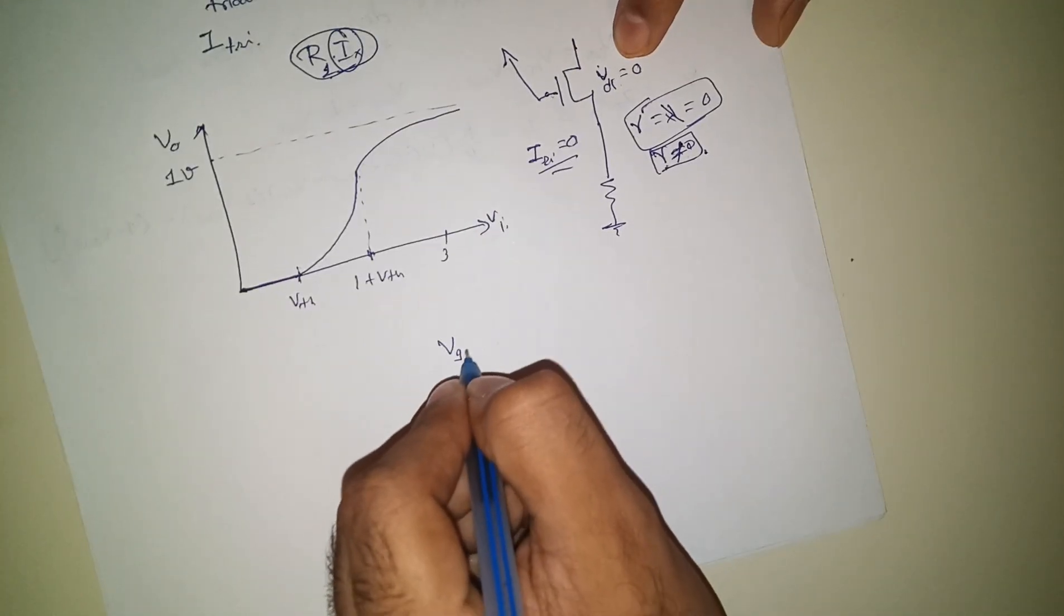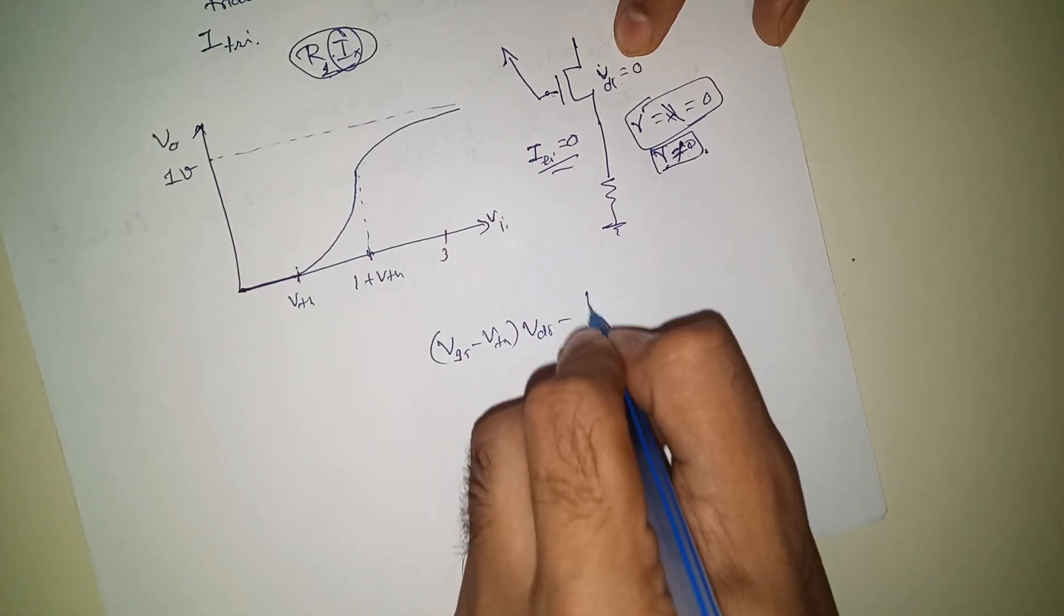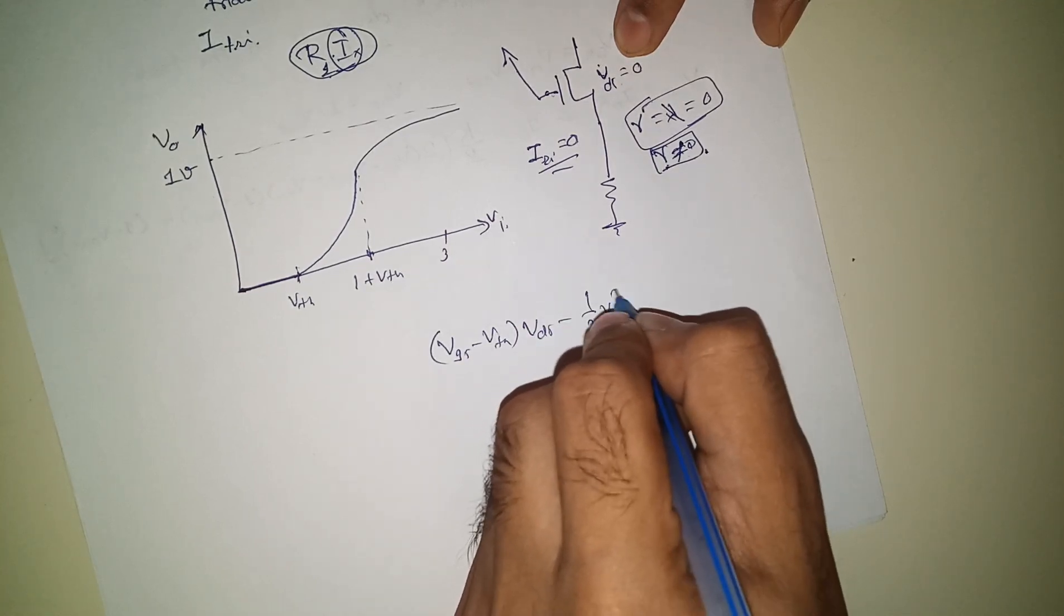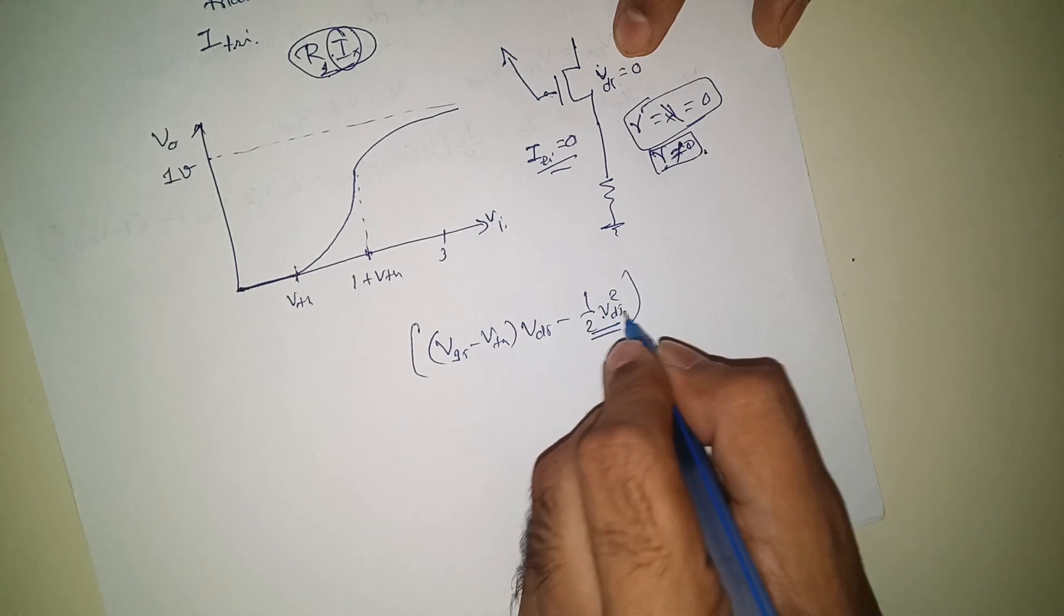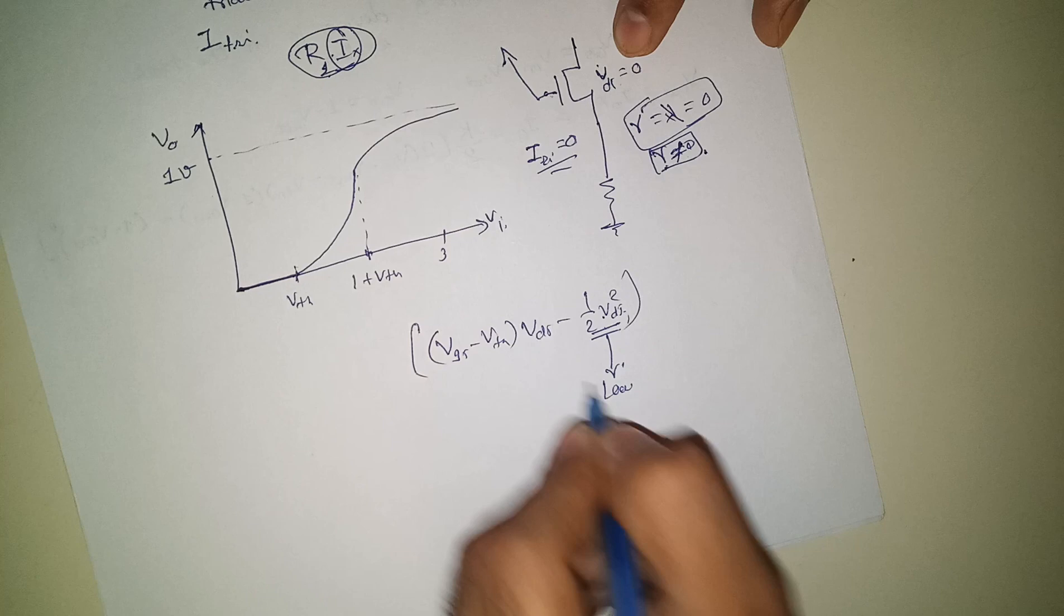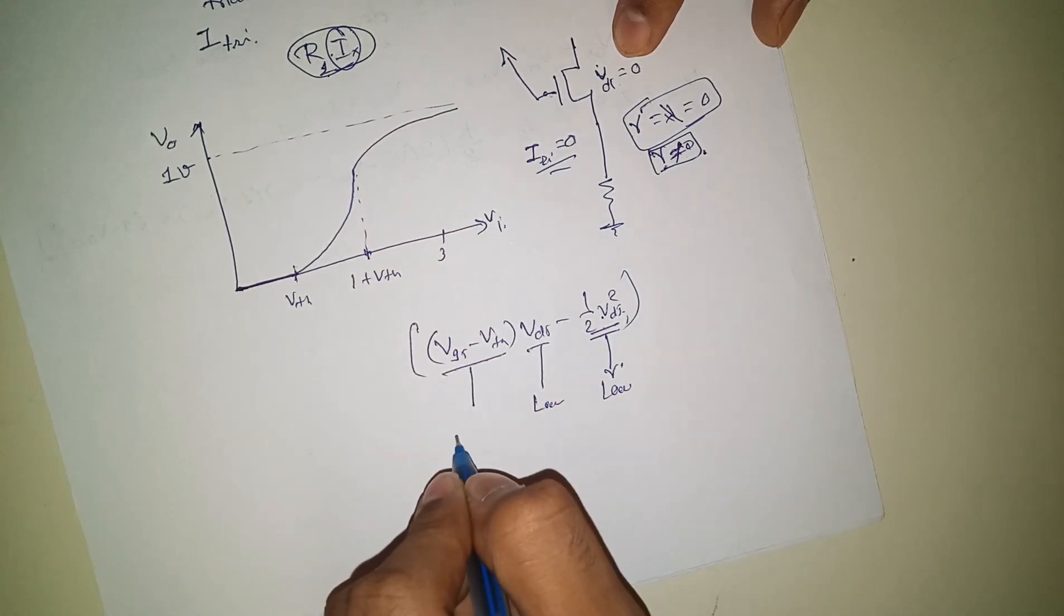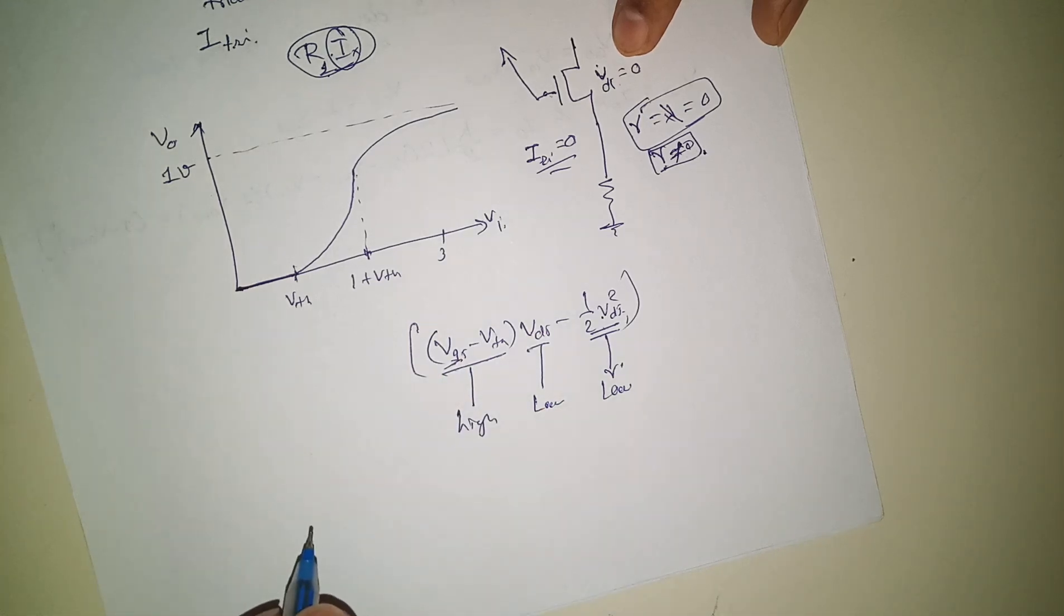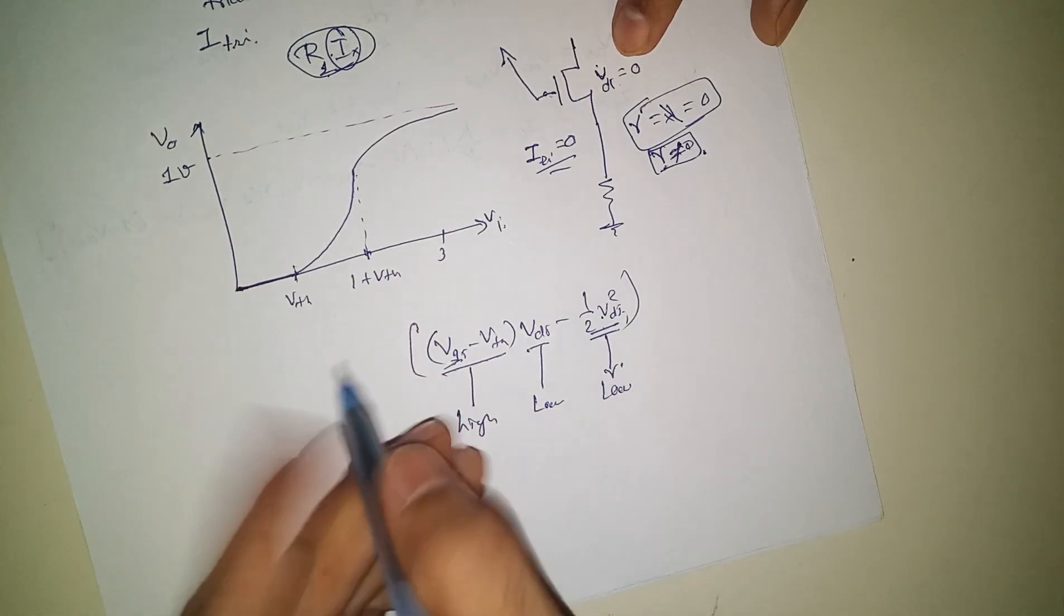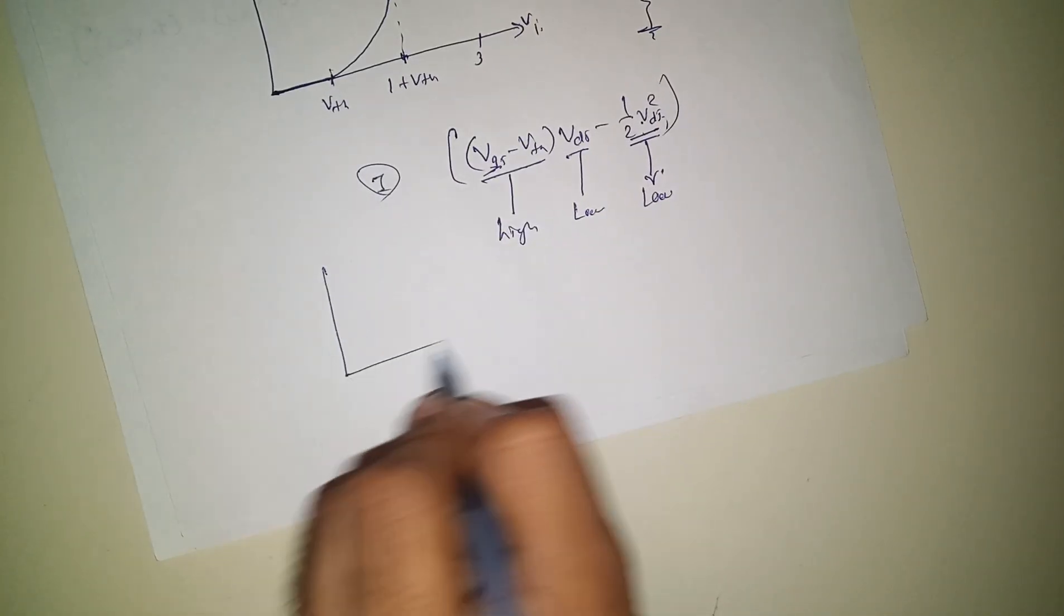And your V_GS minus V_th times V_DS minus one half V_DS squared. This V_DS will be going lower and lower and lower. This will be going lower and lower, but this will be high when your V_DS is low, isn't it? So you will find some I there, definitely.